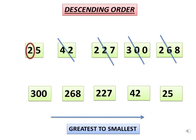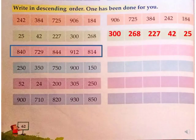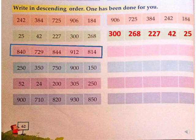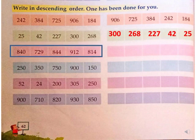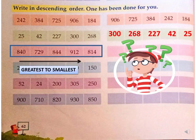In this, 300 is the greatest number and 25 is the smallest. Now read the third part of the given question. Here the numbers are 840, 729, 844, 912, and 814. Let's arrange them in descending order, that is from greatest to the smallest number.